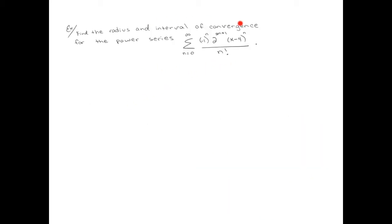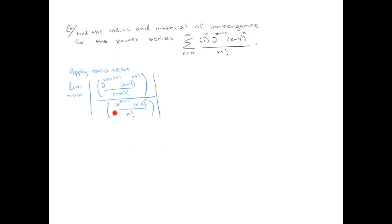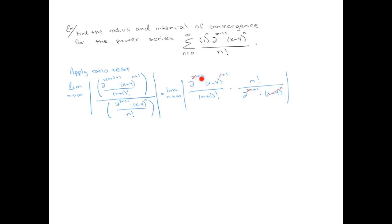Let's do a quick example. Here's a power series — we're going to find the radius and interval of convergence by applying the ratio test. I left the negative ones out because the absolute values will make those signs disappear. Dividing by a fraction, we flip it over. x minus 4 to the n cancels, leaving a single x minus 4 in the numerator. The 2^{2n} terms cancel, leaving 2^3 in the numerator and 2^1 in the denominator. Since (n+1)! equals (n+1) times n!, the n factorials cancel.